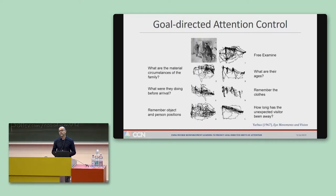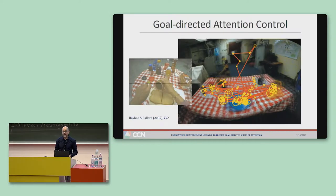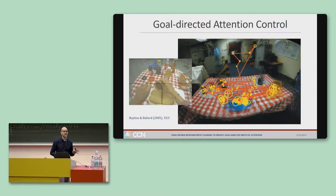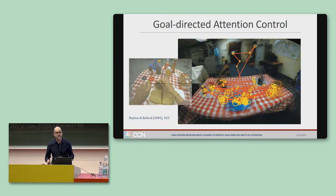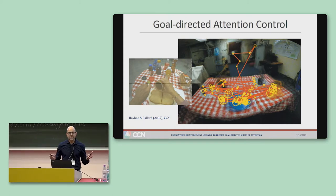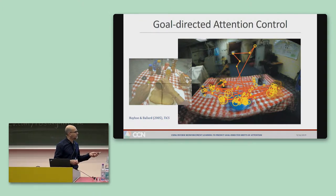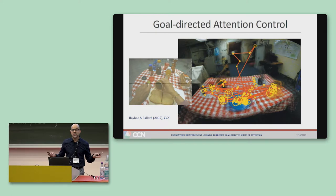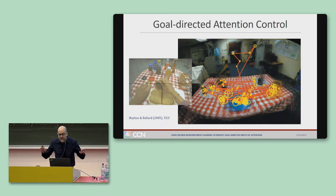Of course, people have been studying goal-directed attention for a long time, dating all the way back to the seminal work by Yarbus. And more recently, goal-directed behavior has been studied in tasks such as making a peanut butter and jelly sandwich, which is interesting because although this sounds pretty easy, it turns out that people make lots of fixations back and forth between these simple ingredients. This really challenges understanding this from a computational perspective.